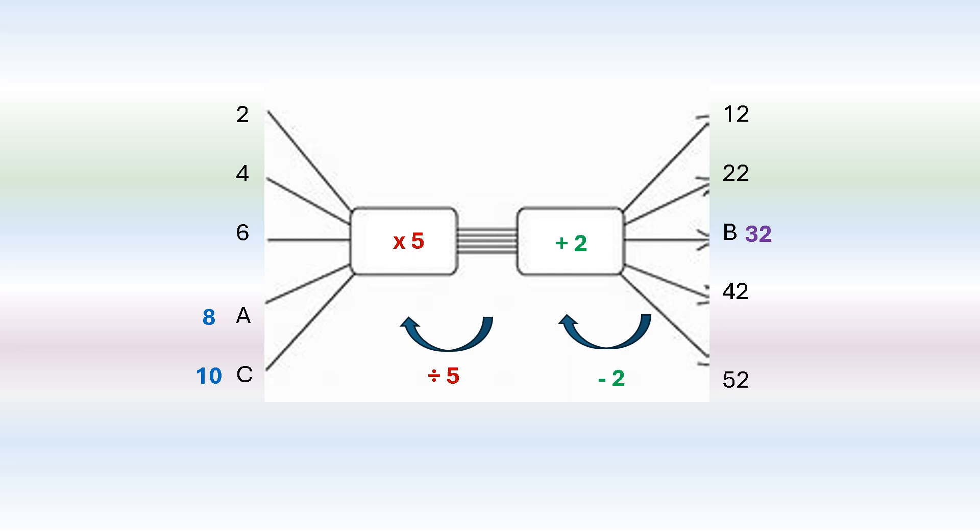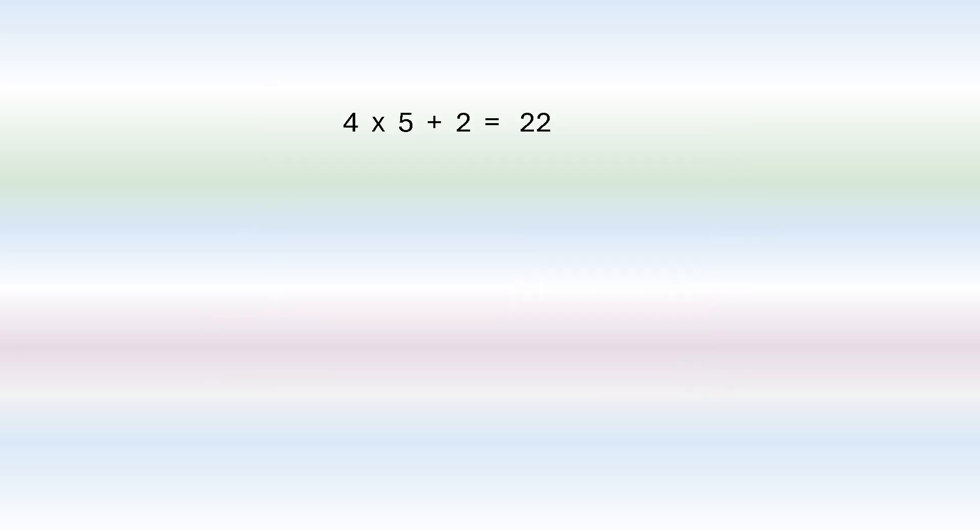Now let's look at this in a number sentence. So we say 4 times 5 plus 2 is equal to 22. But now let's look at this number sentence in a slightly different way. Now we have a missing part of the rule but in the number sentence. We have our total and we have certain numbers.